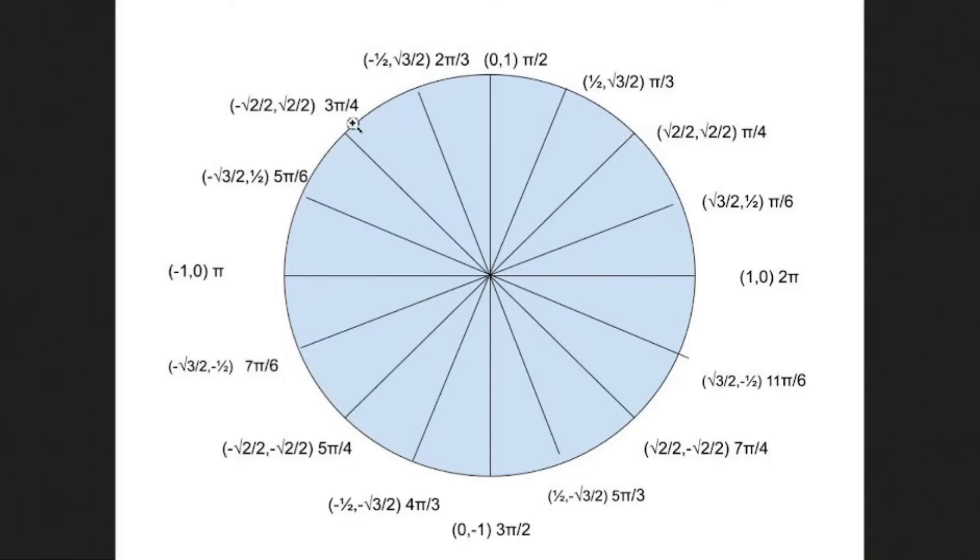But as you go farther, you'll see here, this is a two-thirds pi. That's one less than your denominator. Two is one less than three. This is also one less than your denominator. And your numerator here is also one less than your denominator.